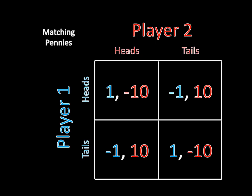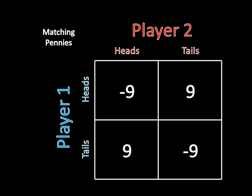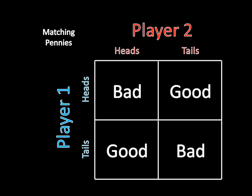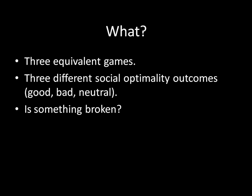We could also draw up the game a third way, where I've left player one's payoffs the same as in the original game, but now I've transformed player two's payoffs by multiplying each of them by 10. If we add things up, we get negative 9 and negative 9 in heads-heads and tails-tails, and positive 9 elsewhere — which translates to bad outcomes in heads-heads and tails-tails, and good elsewhere. This is pretty problematic: we have three equivalent games and three different social optimality assessments. In one game each outcome is good, in one it's bad, and in one it's neutral — which doesn't make sense if these are supposed to be equivalent games.